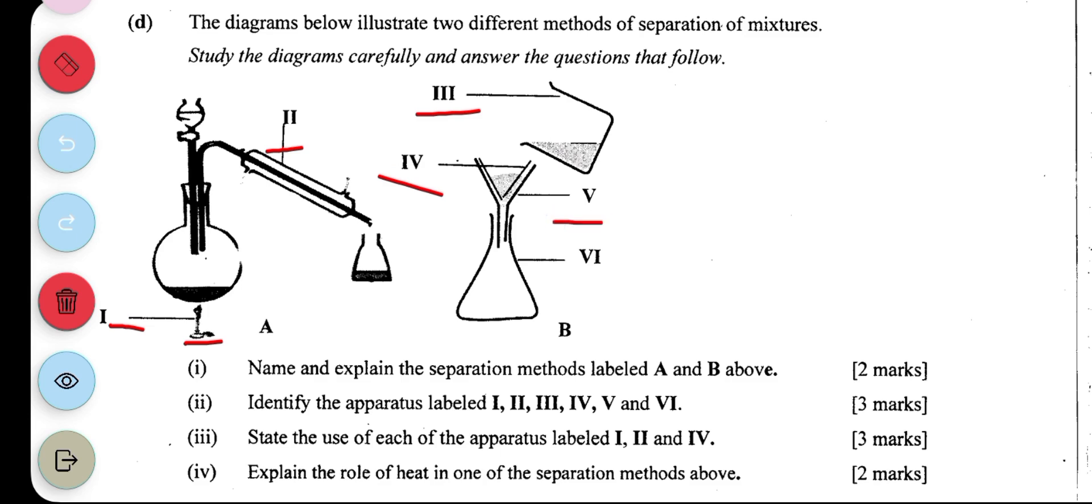State the use of the apparatus I, II, and IV. I, which is the Bunsen burner, is used to heat up the liquid mixture. Then II is the condenser, helps to change the vapor to liquid during distillation. And IV is used to separate the solid particles from the liquid in the beaker.